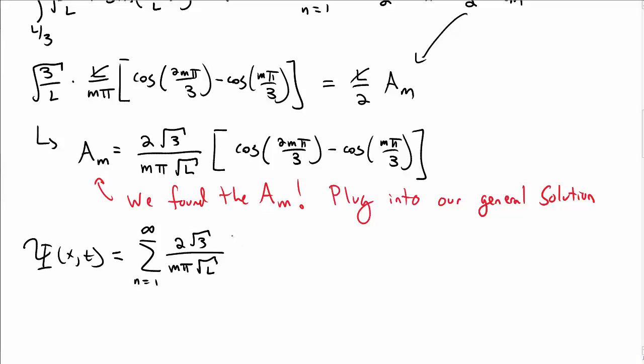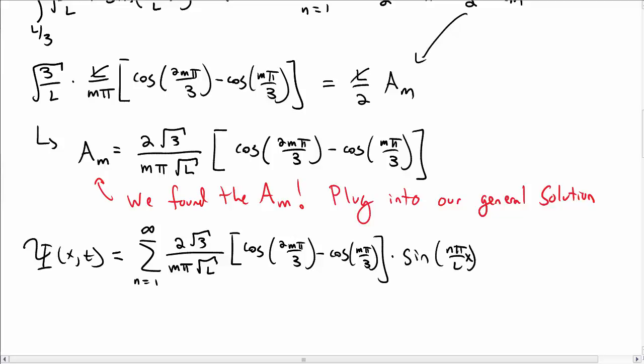So capital psi is just equal to the sum n equal to 1 to infinity. We've got this constant coefficient out front. We have the cosines of 2m pi over 3, minus cosine of m pi over 3. There's sine of n pi, x over L, e to the minus i, e sub n, t over h bar.